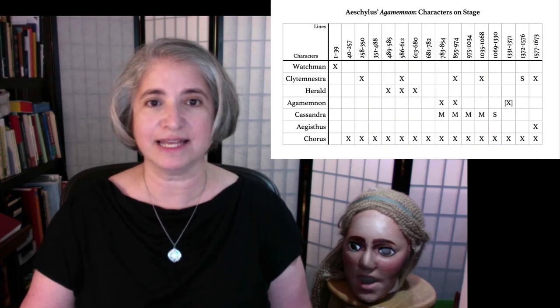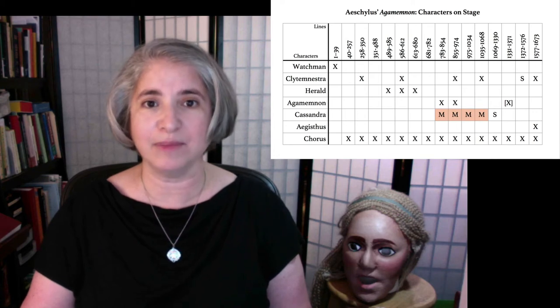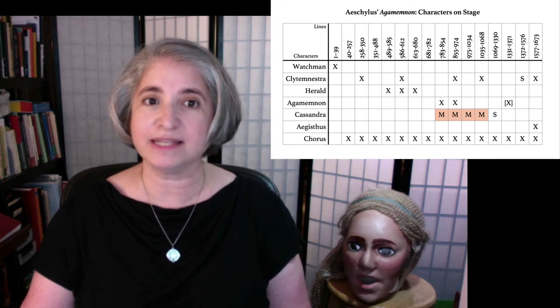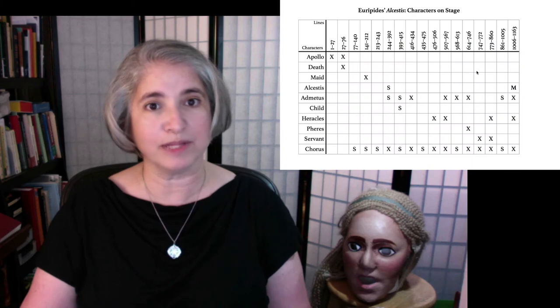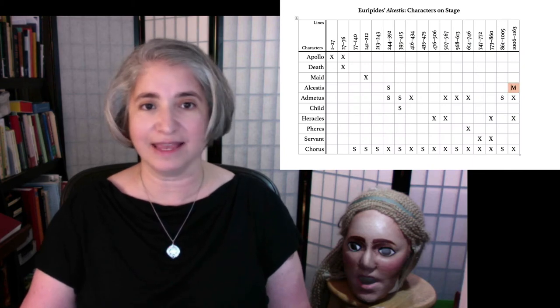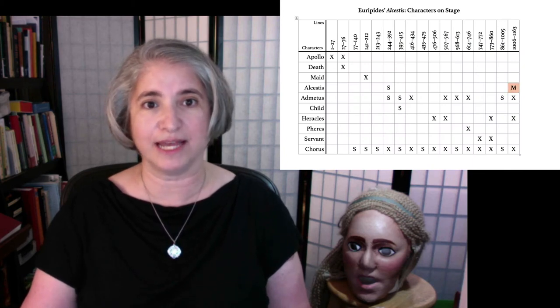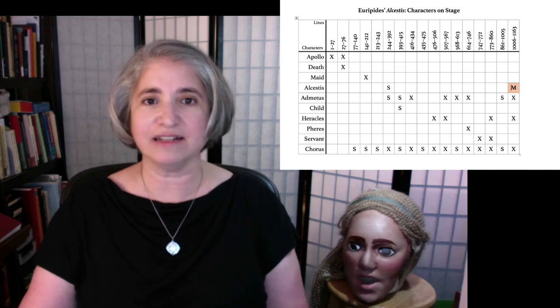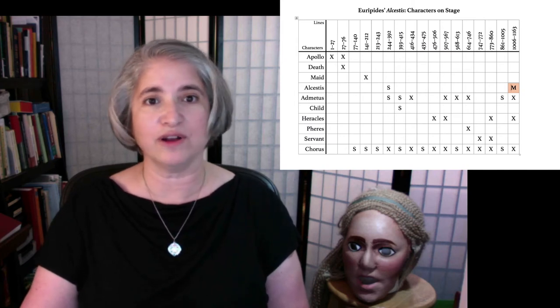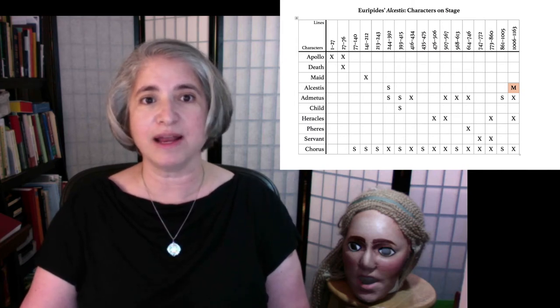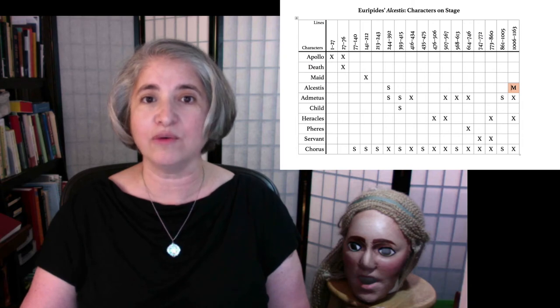Famously, for instance, Cassandra is on stage for a long time in Aeschylus' Agamemnon before she speaks, and Alcestis, in Euripides' play about her, says nothing after Heracles brings her back from the dead. That's easy not to focus on when the actors aren't in front of you, but those silences might have a pretty big impact on the way you understand the plays and the characters in them.